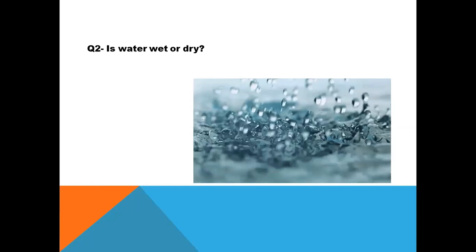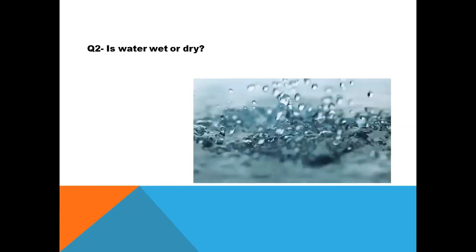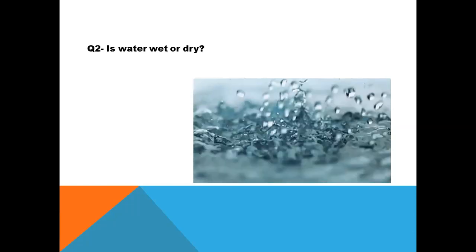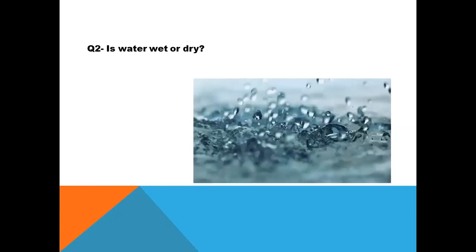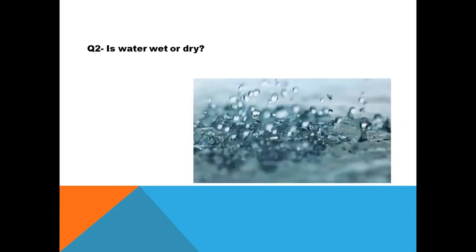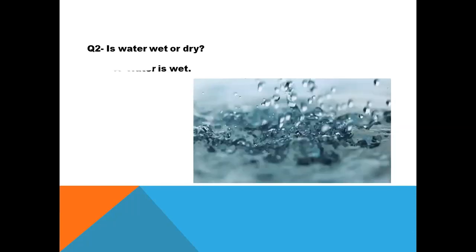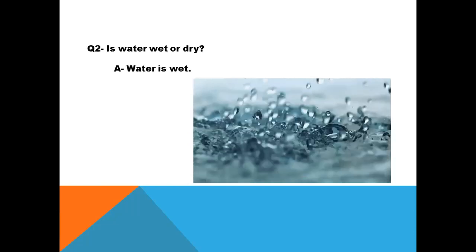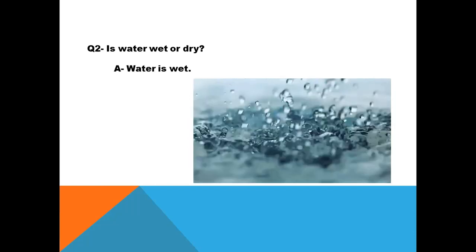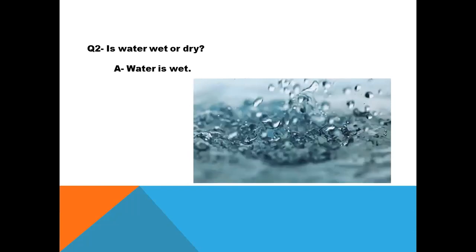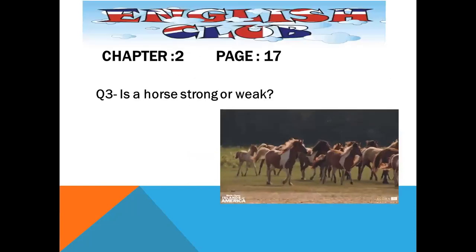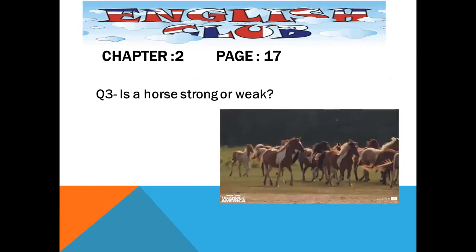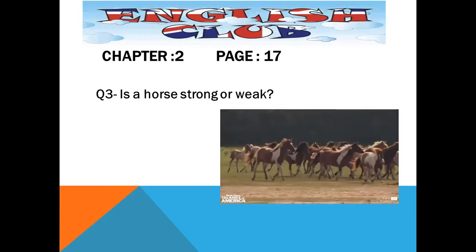Water comes from the sea, rivers, and rain. Water is not dry — water is wet. It is a colorless, transparent liquid. So the answer is: water is wet. Is water wet or dry? Water is wet.